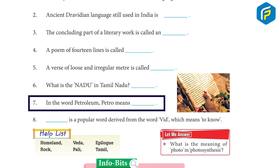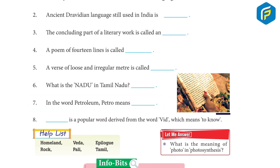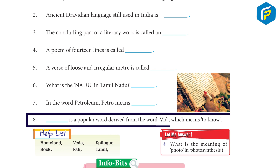Seven: in the word petroleum, petro means rock. Eight: Veda is a popular word derived from the word 'vid', which means to know. Bonus question: what is the meaning of 'photo' in photosynthesis?